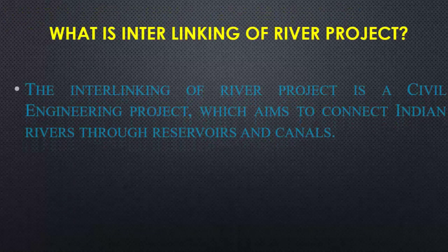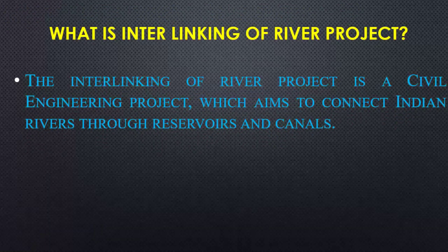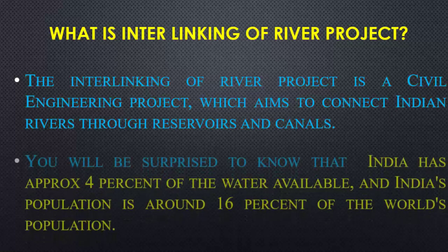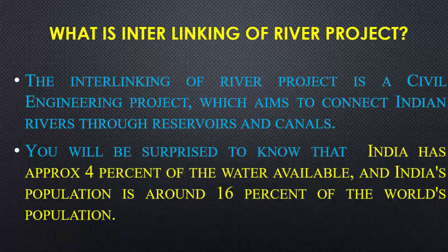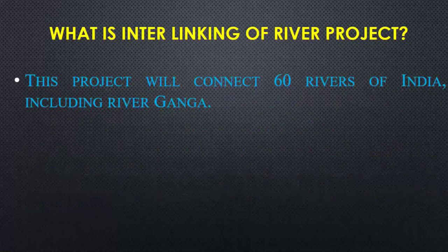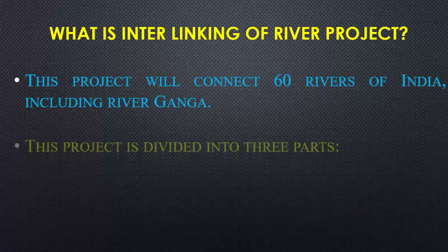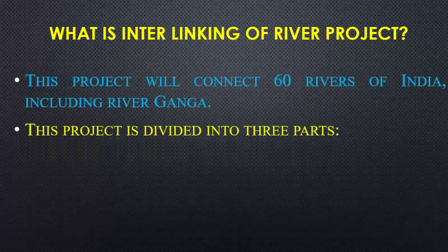Before moving forward, let's quickly understand what the river interlinking project is. The interlinking of rivers project is a civil engineering project which aims to connect Indian rivers through reservoirs and canals. India has approximately 4% of the world's water available, while India's population is around 16% of the world's population, meaning there will definitely be a scarcity of water. This project will connect 60 rivers of India including the river Ganga.